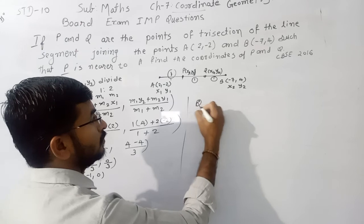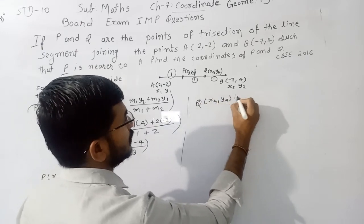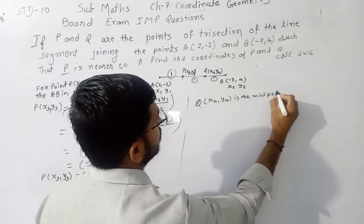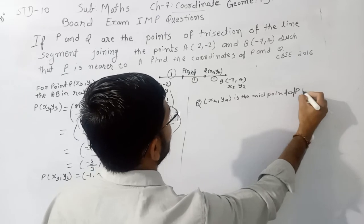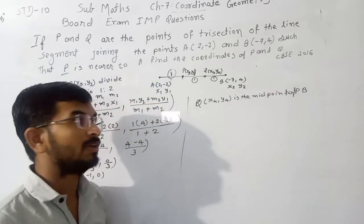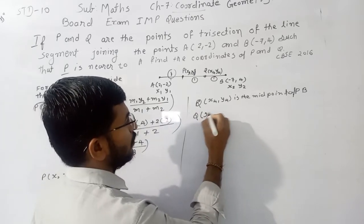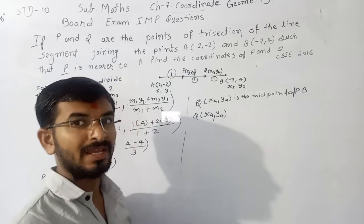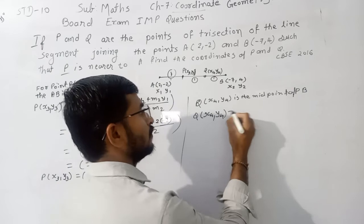Q, X4Y4, is the midpoint of PB. So vertices of Q, X4Y4, we use the midpoint formula. Midpoint formula is x1 plus x2 divided by 2, y1 plus y2 divided by 2. So we put x3 plus x2 divided by 2, y3 plus y2 divided by 2.